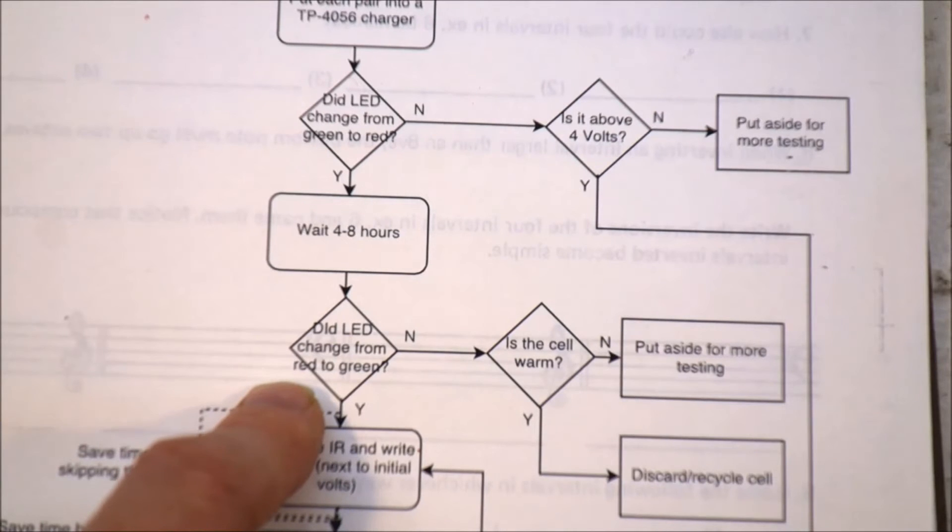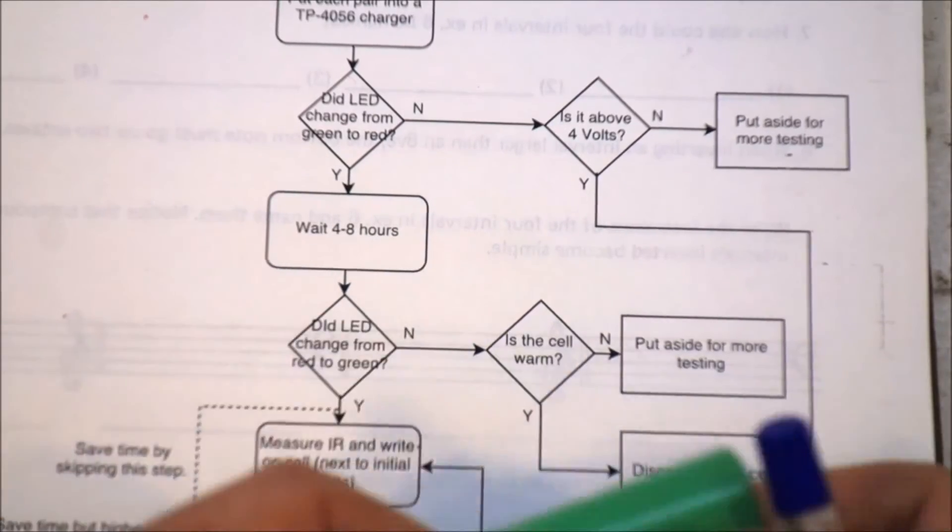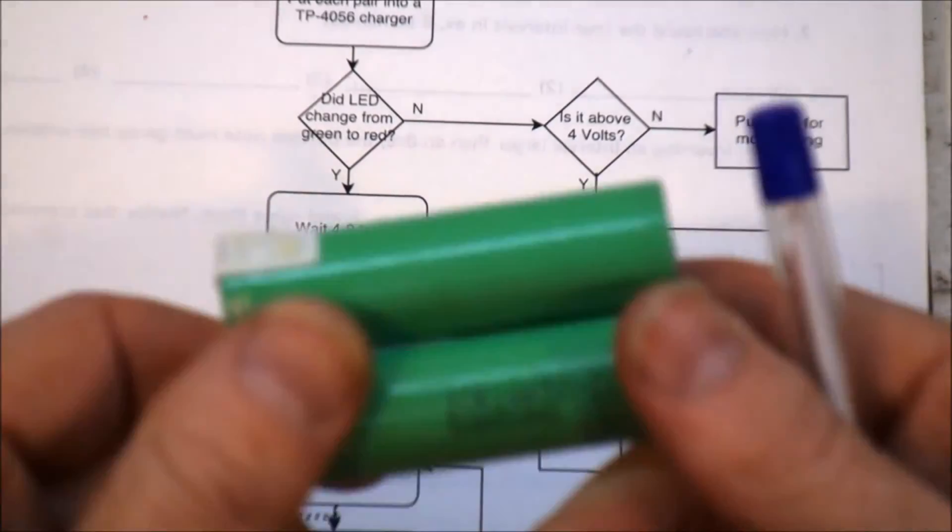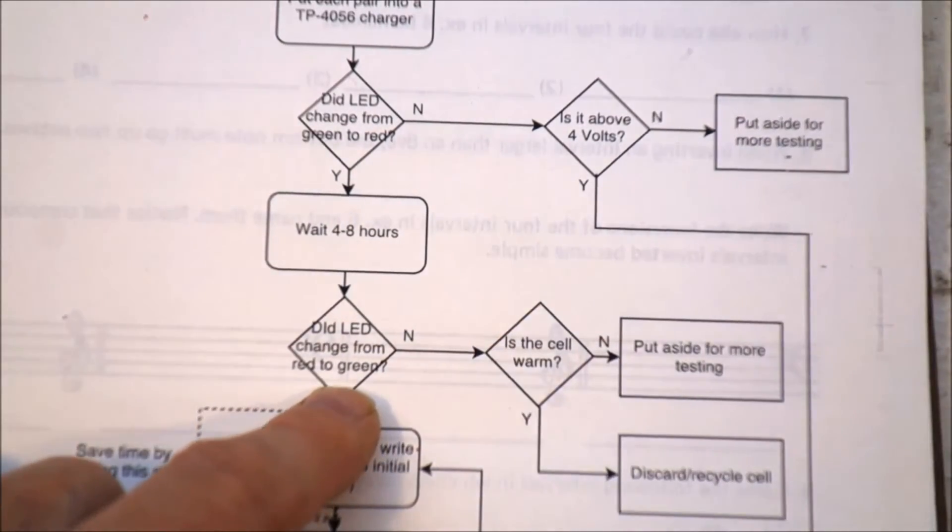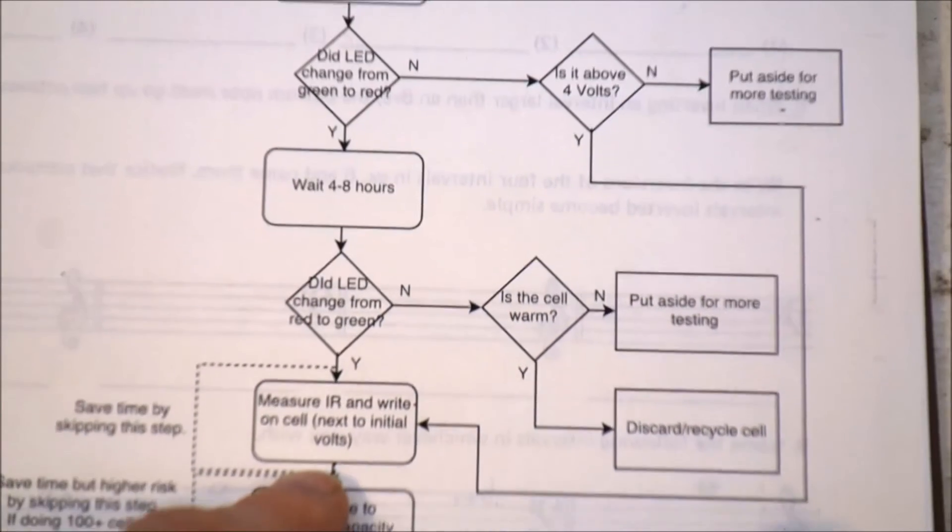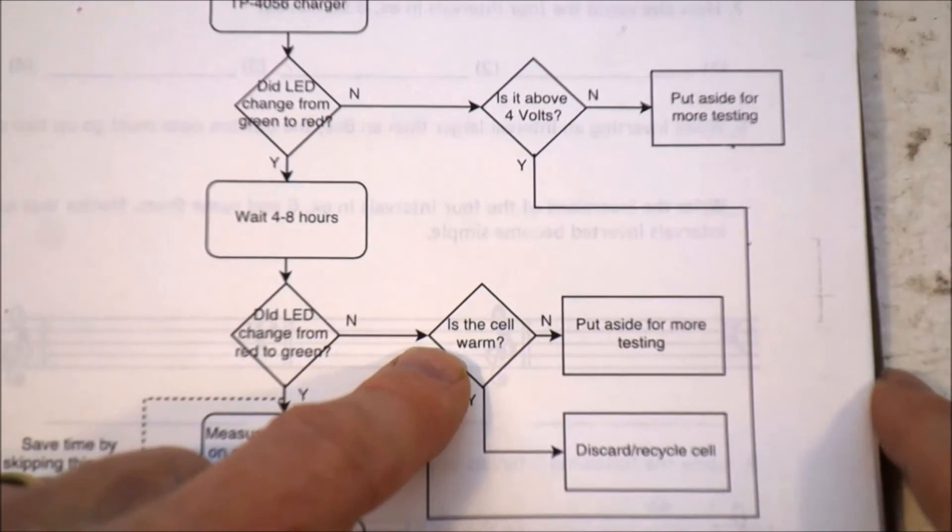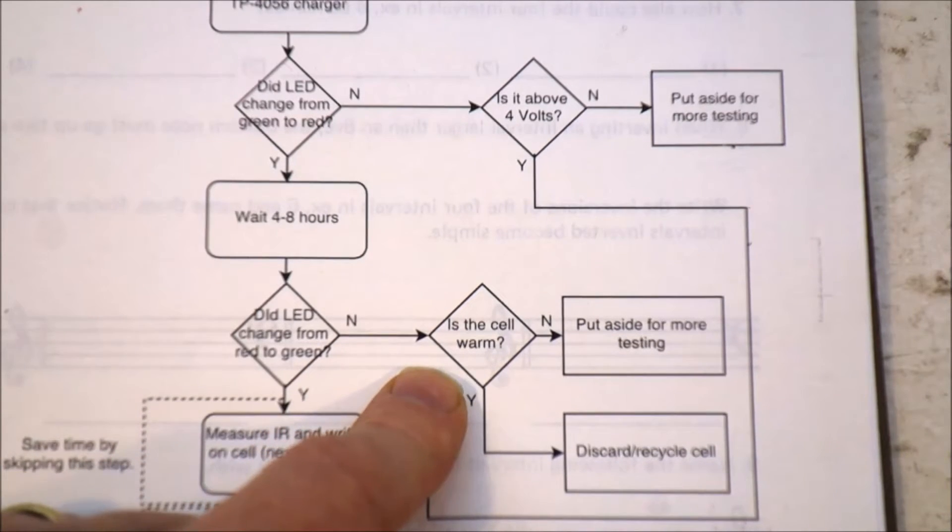Then, has the LED changed from red to green? So, when the charger has successfully charged the cell or the pair, it switches to green which means, as far as I'm concerned, I can move on. If it hasn't, then the next question is, does it get warm?